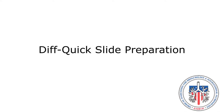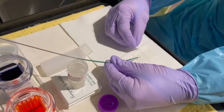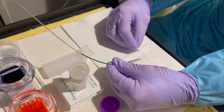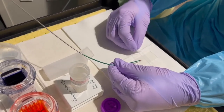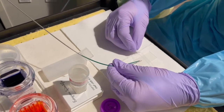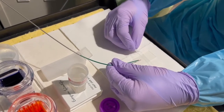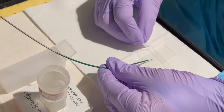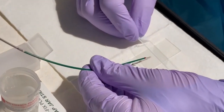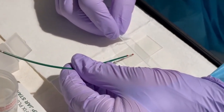This video will demonstrate how to prepare a slide for rows using the DIFFQUAKE method. First, the specimen is transferred to a slide and two smeared slides are made.